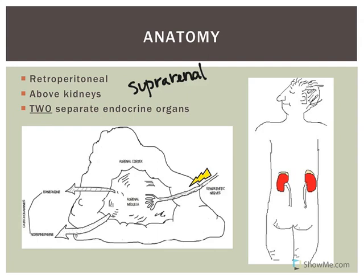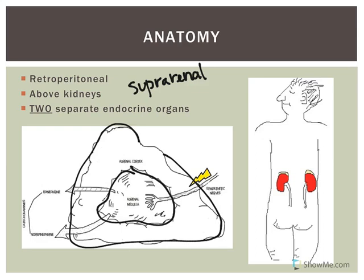The adrenal glands are actually two separate endocrine organs. The outer cortex produces various hormones, and you also have an inner adrenal medulla. The adrenal medulla secretes norepinephrine and epinephrine, and that secretion is stimulated by the sympathetic nervous system. That sympathetic innervation comes from the hypothalamus. The adrenal cortex is more glandular, while the adrenal medulla is a modified sympathetic ganglion, which is nervous tissue.